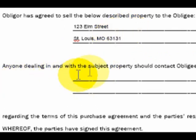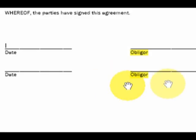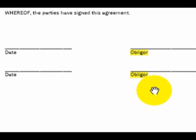Anyone dealing in and with the subject property should contact the Obligee at whatever your address is — you can put in your P.O. box, office address, or home address. It might even be beneficial to put a phone number in here, although you certainly don't have to. That's it. All you do is have it dated, have the Obligeur sign and authorize this document, and you're done.